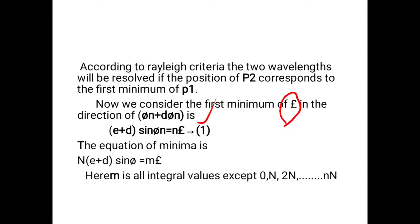The grating equation becomes: (e + d) sin(theta_n) = n * lambda ... equation 1, where n is the order of spectra and (e + d) is the grating element. The equation of the minima is: N * (e + d) sin(theta) = n * lambda.